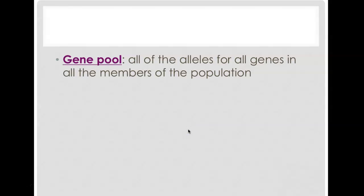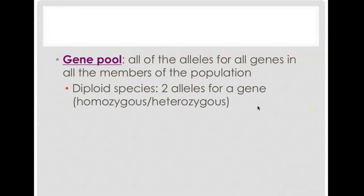When we look at population genetics, we study gene pools — all the alleles for all genes in all members of that population. So if I'm talking about a population of tigers, I'm talking about the gene pool of just that population. A diploid species is one that has two alleles for a gene: homozygous or heterozygous. Humans are diploid — we have two alleles per gene, one from mom and one from dad. Any sexually reproducing species is a diploid species.